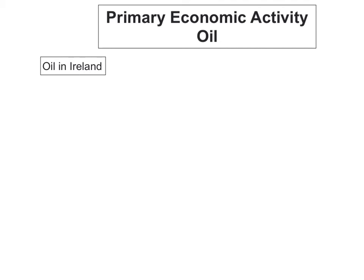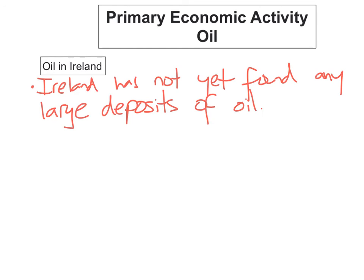If Ireland were to find an oil deposit, it would transform the Irish economy. However, we have not yet found any large deposits of oil off the coast of Ireland. We did find gas in Kinsale, and that gas has been used to supply Dublin and other major cities. Gas was also discovered off the coast in the Corrib gas field, though there has been lots of controversy regarding whether the gas should be brought ashore or not.